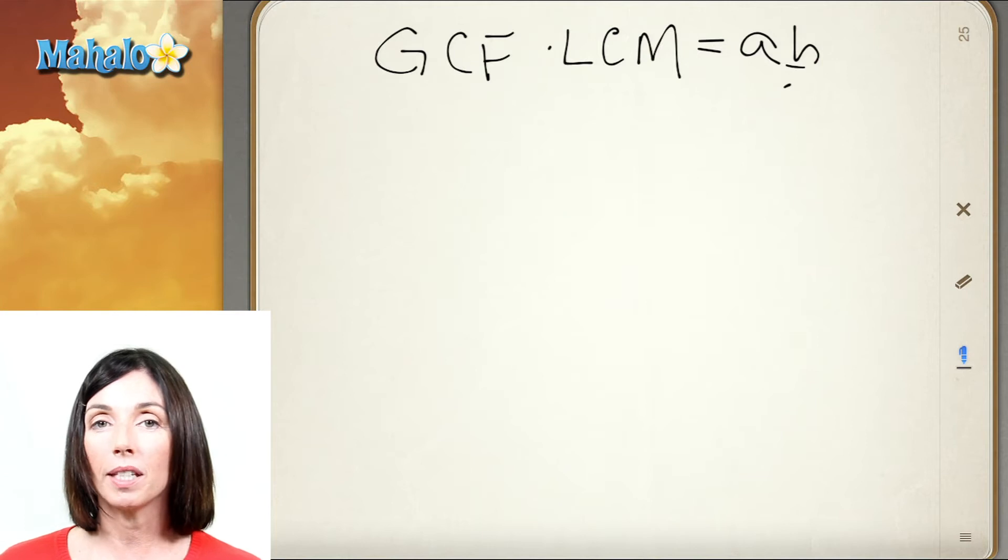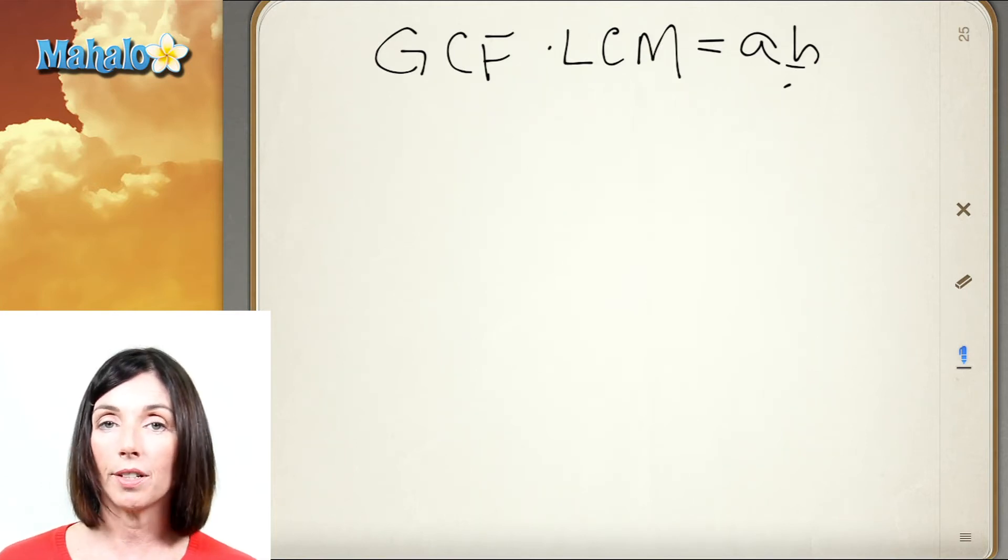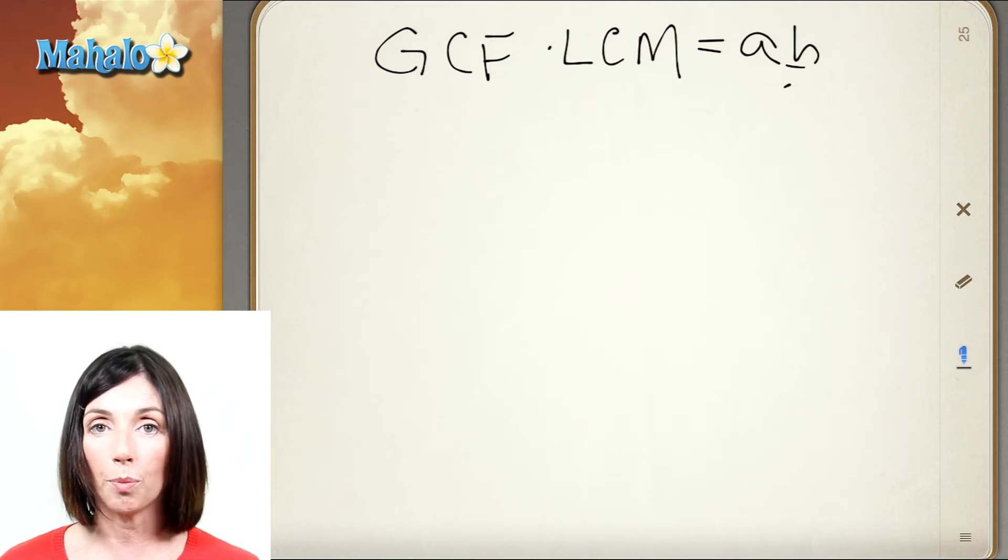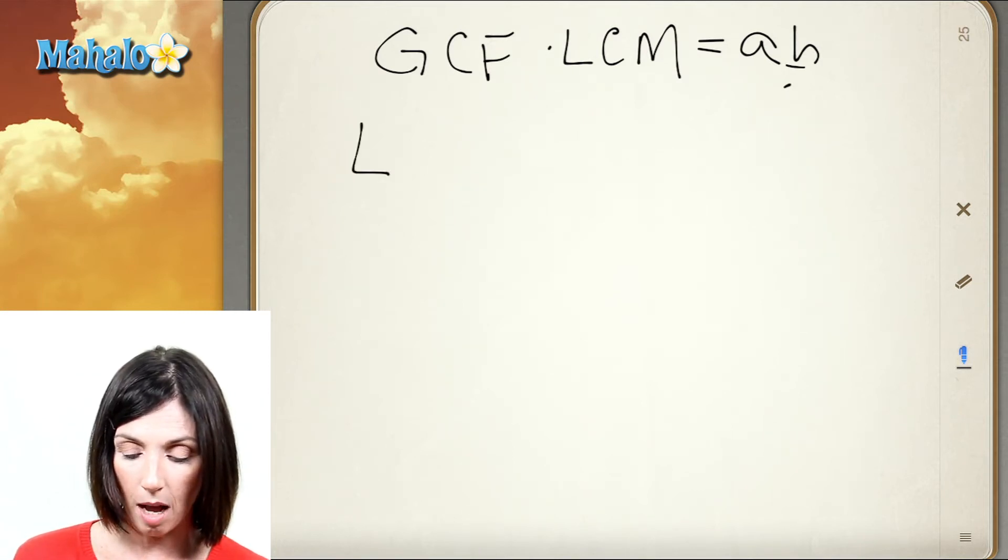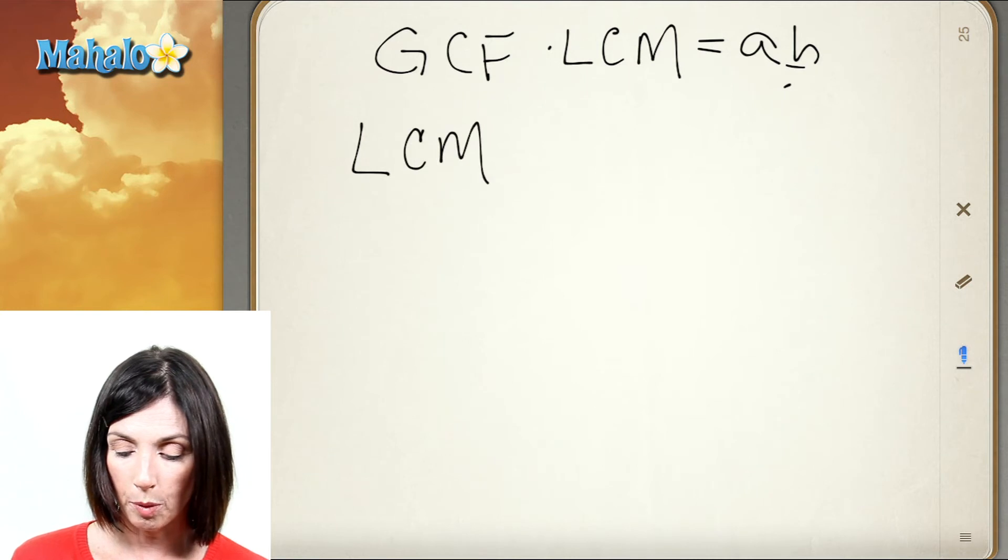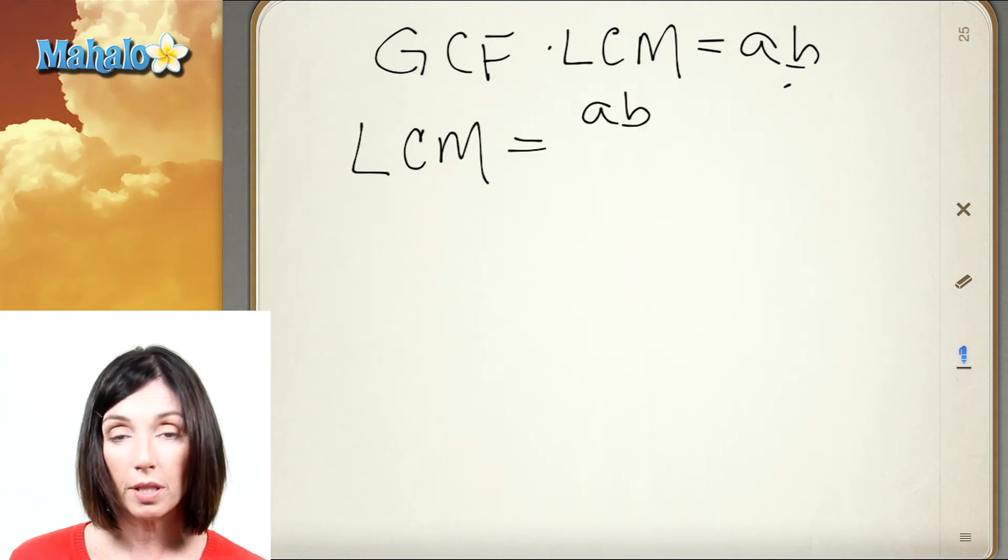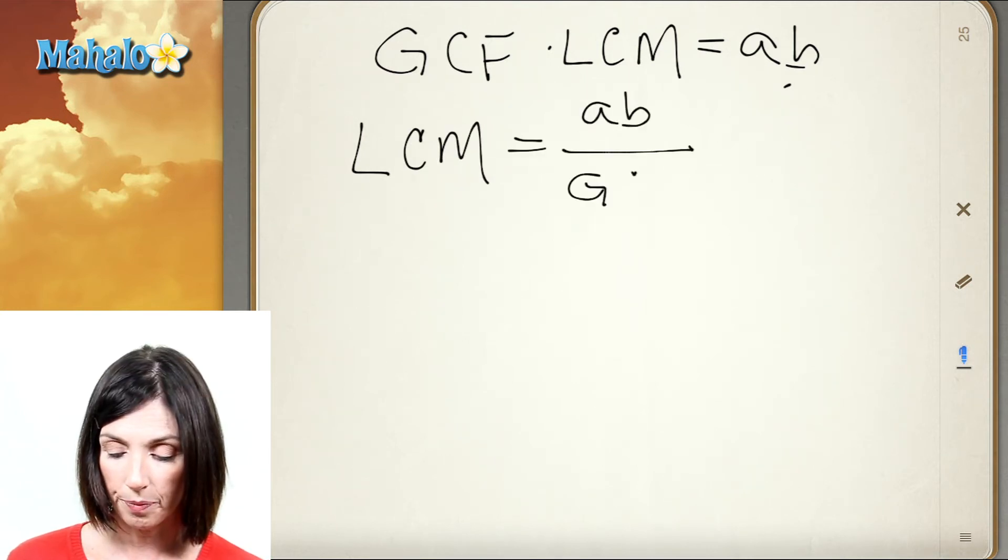So we're going to use our theorem to now find the least common multiple. Now I know that the greatest common factor times the least common multiple is equal to the product of the numbers themselves. That means that the least common multiple will be equal to the product of the two numbers divided by the greatest common factor.